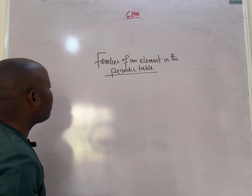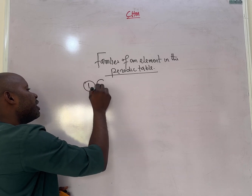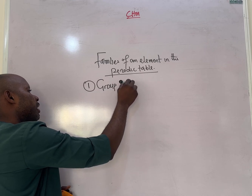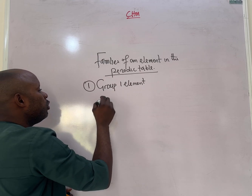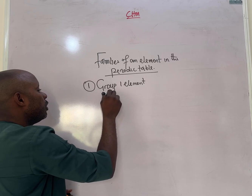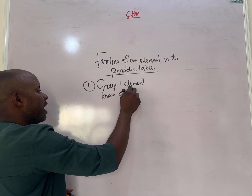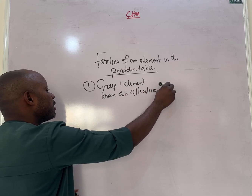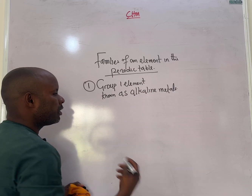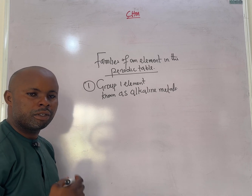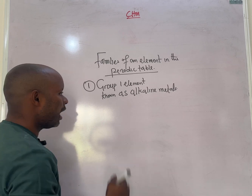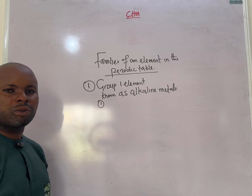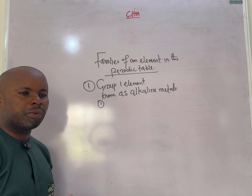One family in the periodic table is the group one elements, also known as the alkali metals. They contain elements like sodium, potassium, and lithium, and have one electron in the outer shell. One of their major characteristics is that they react vigorously with cold water.